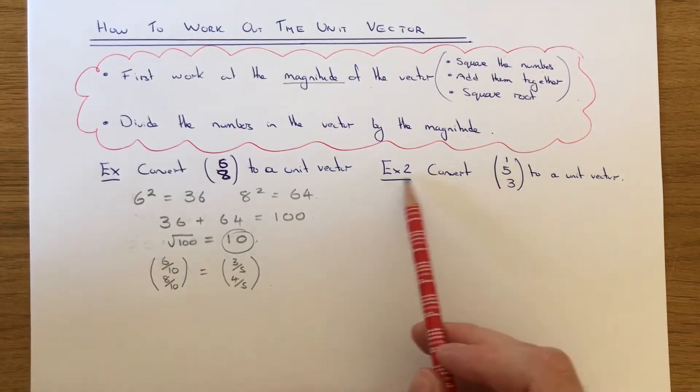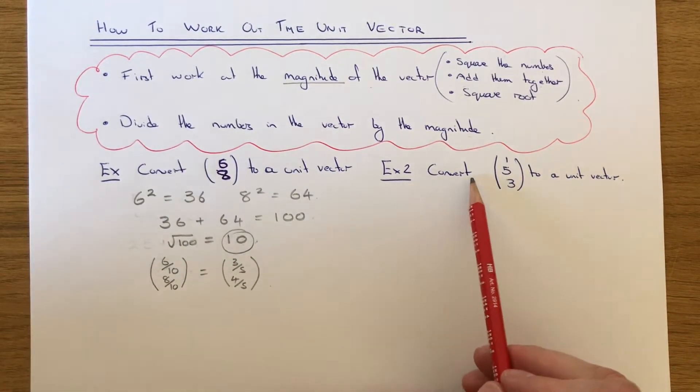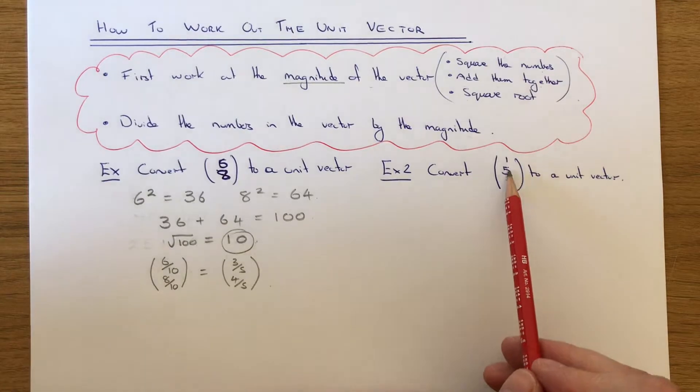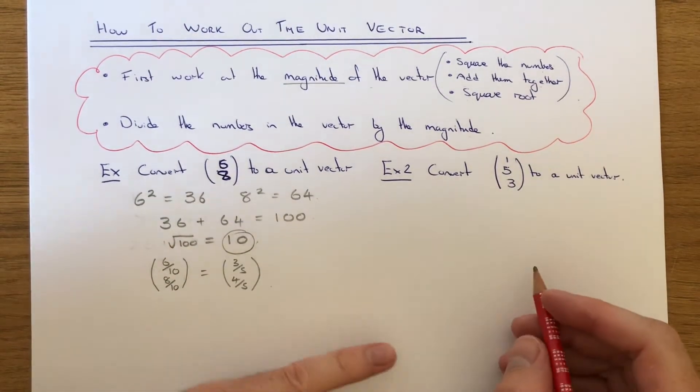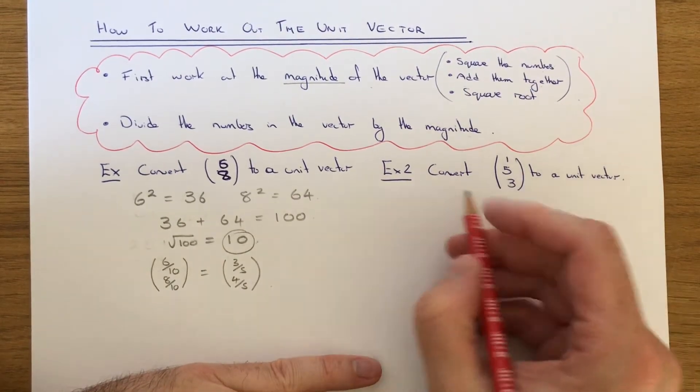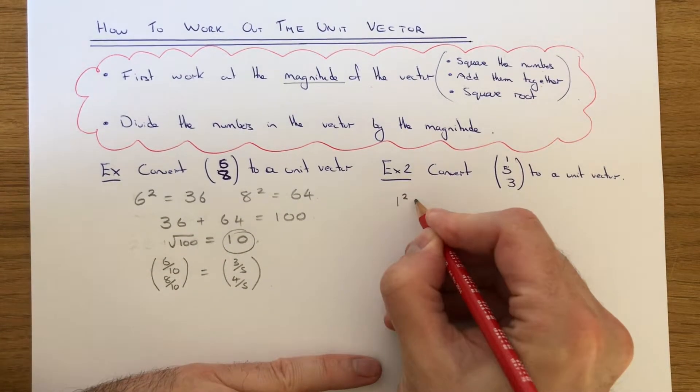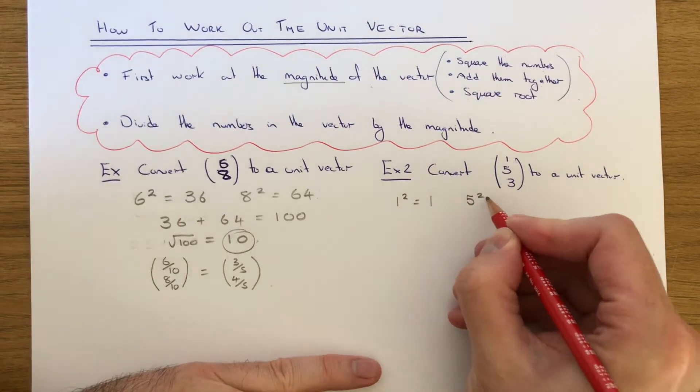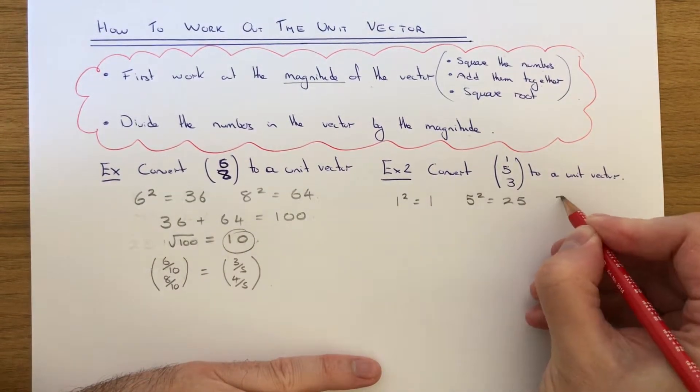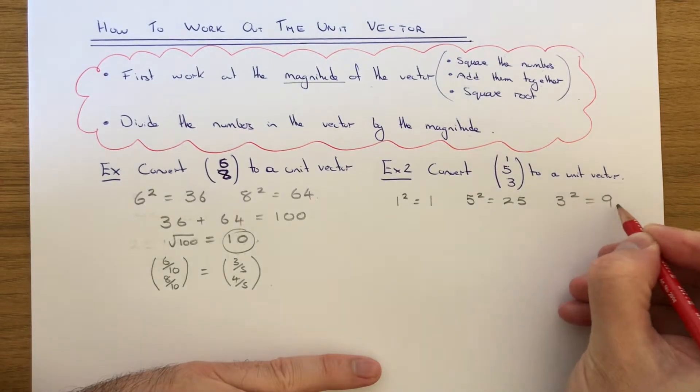Let's do example 2. This time we've got the vector (1, 5, 3) and we need to convert it to a unit vector. Again, we find the magnitude of this vector first. If we square the numbers in the vector: 1 squared is 1, 5 squared is 25, 3 squared is 9.